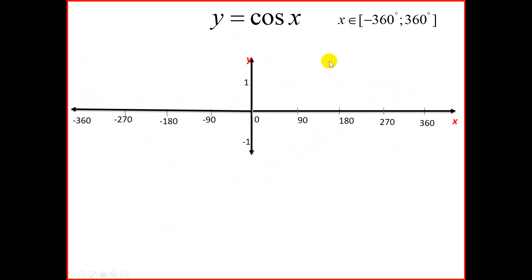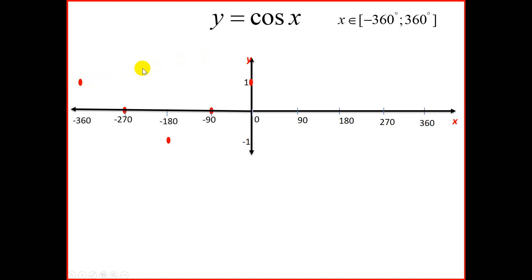We're going to carry on drawing on the negative side, from minus 360 to 360. At 0, cos 0 gives us 1. Moving to negative 90, cos negative 90 gives 0. At minus 180, cos minus 180 gives negative 1. At minus 270, cos minus 270 gives 0. At minus 360, cos 360 gives 1. Then we join the dots to get a gentle curve.